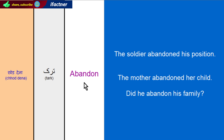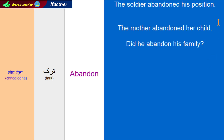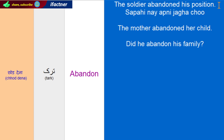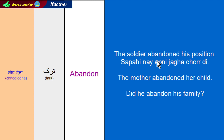Now let's make a few sentences and translate them in Urdu and Hindi. The first sentence is: The soldier abandoned his position. Soldier is Sapahi, abandoned is chhoddi or Tarkh kardhi, his is Apani, and position is Jagah. So in Urdu and Hindi we will say: Sapahi Ne apani jagah chhoddi. The soldier abandoned his position.